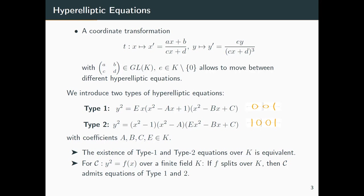One can also show that the existence of a Type 1 equation is equivalent to the existence of a Type 2 equation, by just applying an easy coordinate transformation between the two.